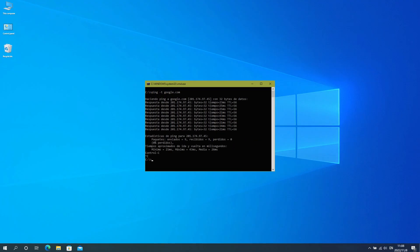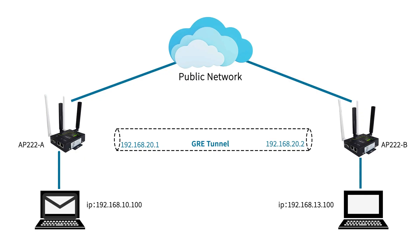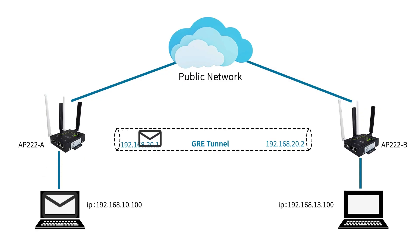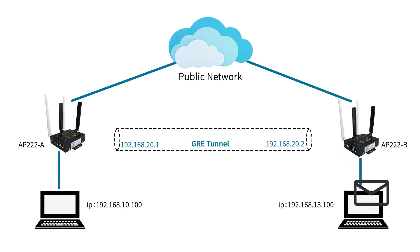To confirm, open the command terminal on Computer A and Computer B and ping each other. Here you can see that both ethernet devices on the end of AP222A and AP222B can communicate via the GRE tunnel we just configured.